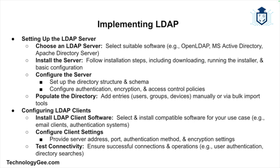Implementing LDAP involves several steps, from setting up the directory server to configuring clients and integrating applications. First, choose an LDAP server software that meets your needs — popular choices include OpenLDAP, Microsoft Active Directory, and Apache Directory Server. Then install the server by following the installation instructions, which typically involves downloading the software, running the installer, and configuring basic settings. After that, configure the server by setting up the directory structure, defining the schema, configuring security settings, setting up authentication and encryption, and defining access control policies. Finally, populate the directory by adding entries such as user accounts, groups, and devices — either manually or through bulk import tools.